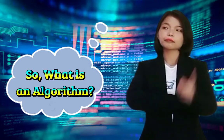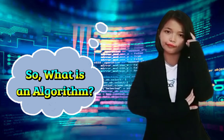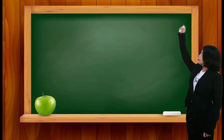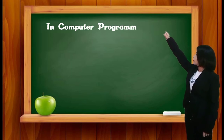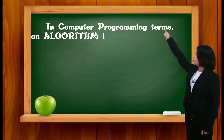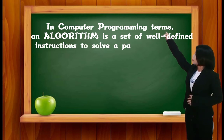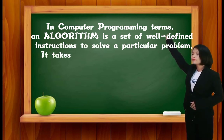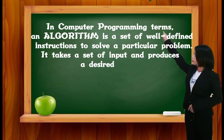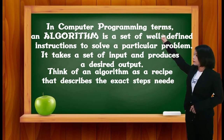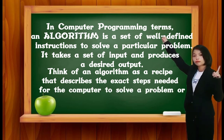So, what is an algorithm? In computer programming terms, an algorithm is a set of well-defined instructions to solve a particular problem. It takes a set of inputs and produces a desired output. Think of an algorithm as a recipe that describes the exact steps needed for the computer to solve a problem or reach a goal.